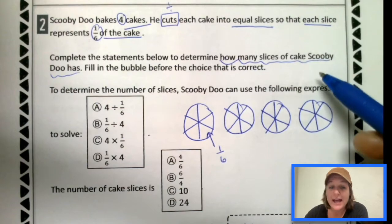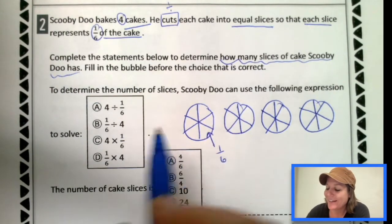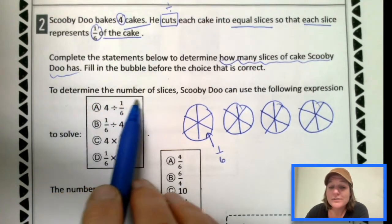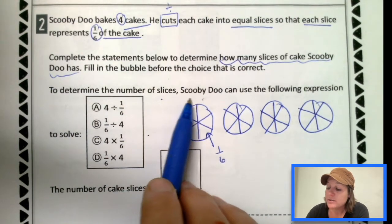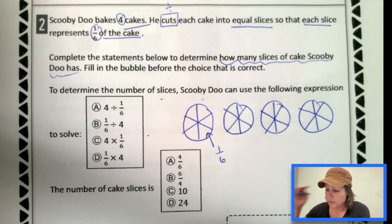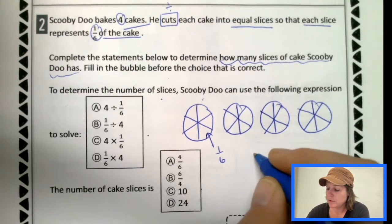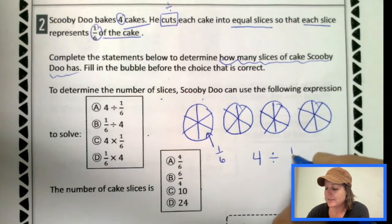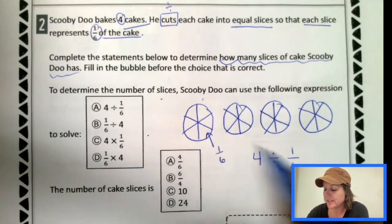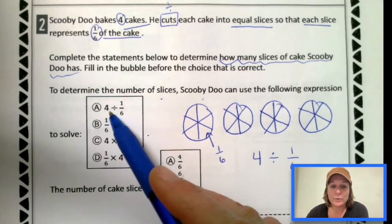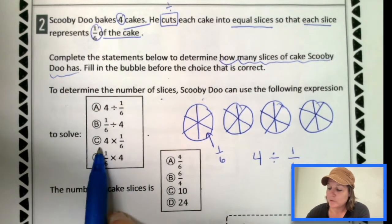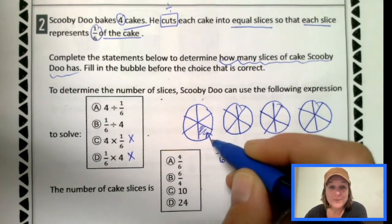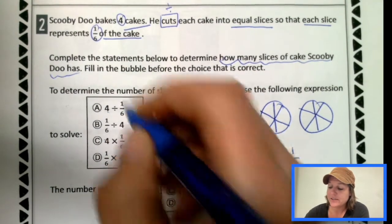Complete the statements below to determine how many slices of cake Scooby Doo has. Fill in the bubble before the choice that is correct. So to determine the number of slices, Scooby Doo can use the following expression to solve. We had four cakes total. We took those four cakes and we cut them into one sixth each. So each one was one sixth. So we need to pick this one right here because we knew the total and we divided it out. It wasn't four groups with one sixth shaded, and we're not taking this one little piece and dividing it into four pieces. We know the total was four and we're dividing it into six. So it should be A.